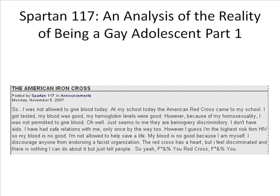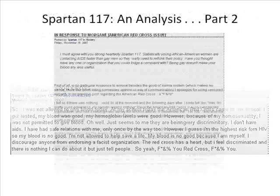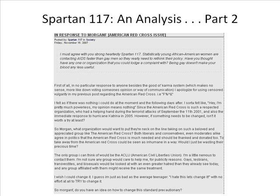Partway through the year, a blog post entitled 'The American Iron Cross' appears, unlike any seen before. In this post, he talks about going to give blood and being rejected because he's gay — his sense of frustration, anger, and disempowerment just because of who he is, something central to his identity that prevents him from participating in general American life and from doing something good. That American Iron Cross post got a great deal of response from students, who shared in Spartan 117's outrage, offered solutions, and sympathized with him. Spartan 117 then picked one comment to respond to as a way of further highlighting and exploring the issue affecting his existence.